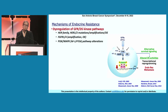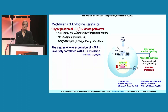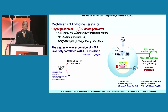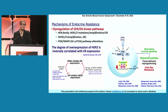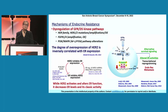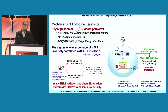This crosstalk also leads to decreased estrogen receptor levels. The degree of HER2 overexpression is inversely correlated with estrogen receptor expression, especially in HER2-positive tumors. HER2 overexpression inhibits ER expression via its downstream kinases — PI3K, AKT, and MAP kinase. Conversely, ER inhibits HER2 expression. So while HER2 activates and alters ER function, it decreases ER level and its classic activity, meaning decreased activation of classic estrogen-stimulated genes such as BCL2, IGFR, and progesterone receptor — which can partly explain the biology of ER-positive, PR-negative tumors.